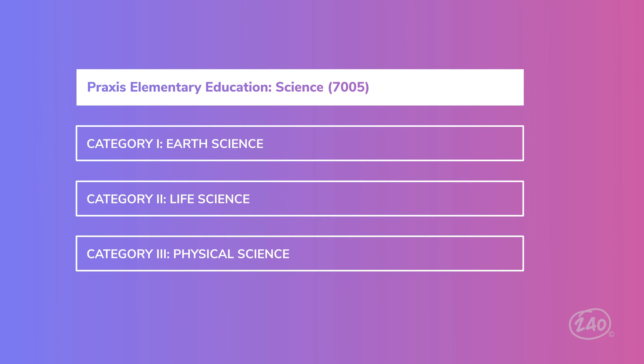Now the Praxis Elementary Education Science Subtest consists of three overarching categories. The categories are Earth Science, Life Science, and Physical Science. Let's go ahead and talk about some key concepts. Each of the original three categories makes up about 33% of your test, so you're likely to see, on average, about 17 questions from each branch of science.